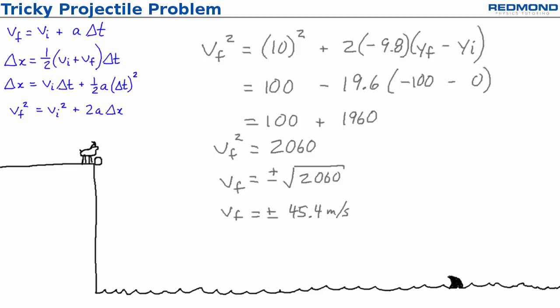A positive v final y would mean that the rock was traveling upward when it hit the water. Then Billy remembers that the equations are helpful but dumb. The square root can be positive or negative and it's up to him to decide based on his understanding of physics. The rock must be going down just before it hits the water so Billy chooses negative 45.4 meters per second.